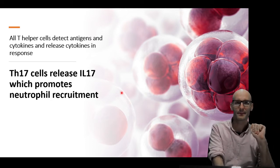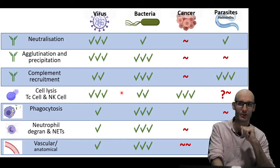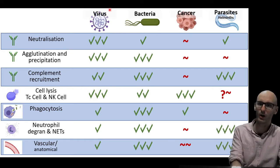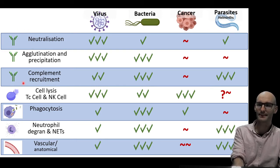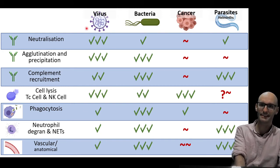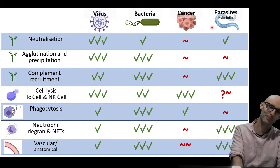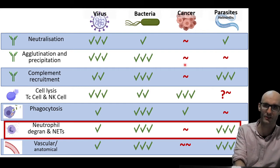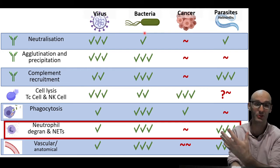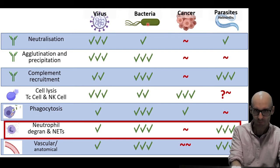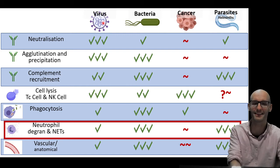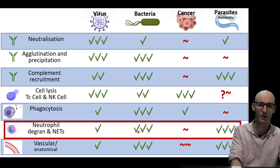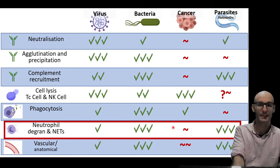The Th17 doesn't influence many of the adaptive immune cells — its major function is the inflammatory response it induces. Looking at the chart here covering antibody effects, cytotoxic T cell and natural killer cell effects, phagocytosis, and neutrophil degranulation, the Th17 response induces neutrophil degranulation and the ptosis response. It's most famous for targeting bacteria and fungi — those microscopic organisms — and is also pretty good against parasites. So the Th17 response is effective across a lot of these by inducing an inflammatory response.